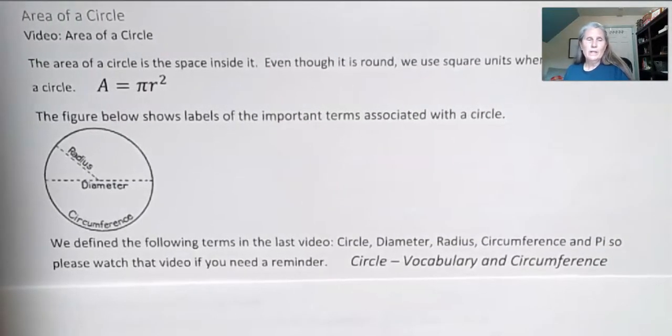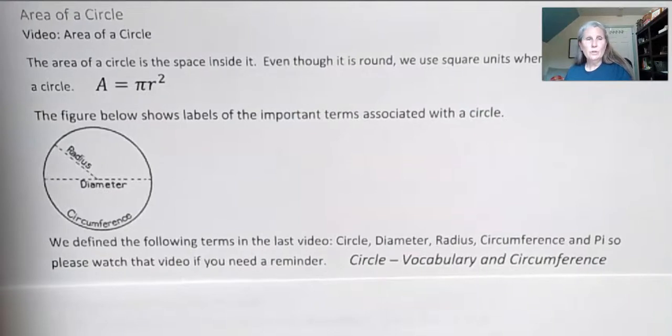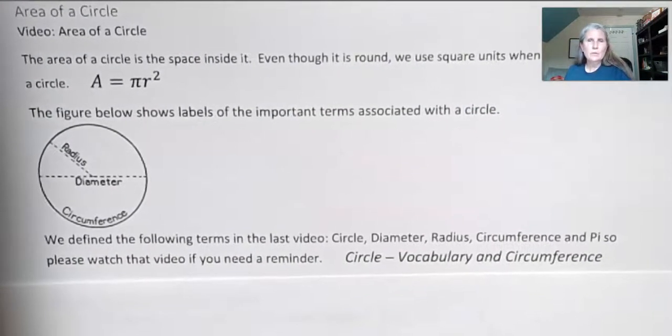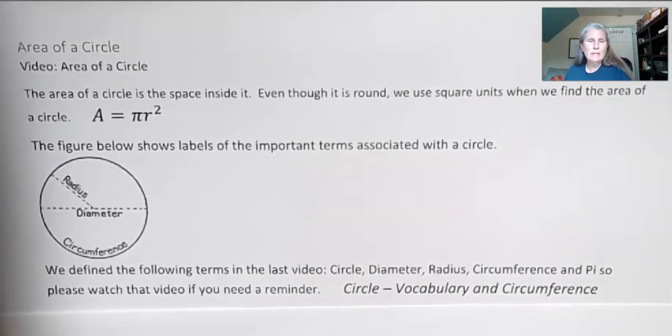Hi, I'm Carly McEvoy. Today I'm talking about area of a circle. The area of a circle is just the space inside of it. And even though it's round, we use square units when we find the area of a circle. And we use the formula A equals pi r squared.